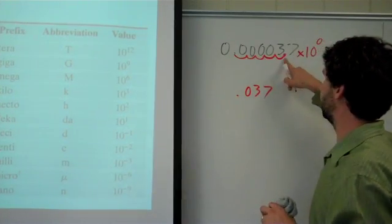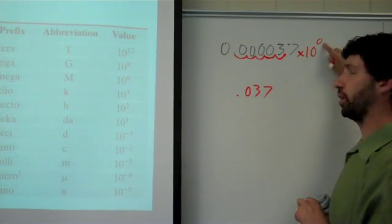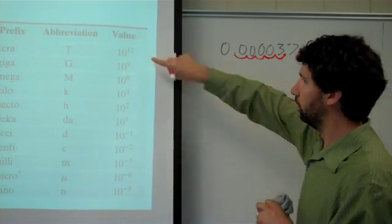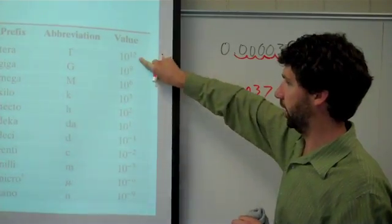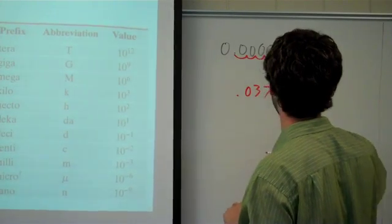Now if I went right there so that I was in scientific notation - I went one, two, three, four, five - that means this is either going to be 10 to the fifth or 10 to the negative fifth. But there's no 10 to the fifth or 10 to the negative fifth here at all. So what we're going to do is go one more place and go right there.